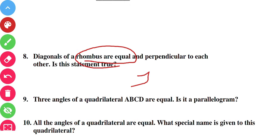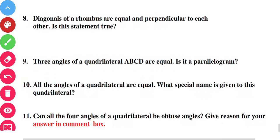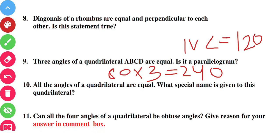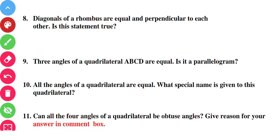Question number nine: three angles of quadrilateral ABCD are equal. Is it a parallelogram? If each of the three angles is 80 degrees, then three times 80 = 240. The fourth angle would be 360 minus 240 = 120 degrees. Since the angles are not all equal in pairs, this is not a parallelogram — the answer is no.